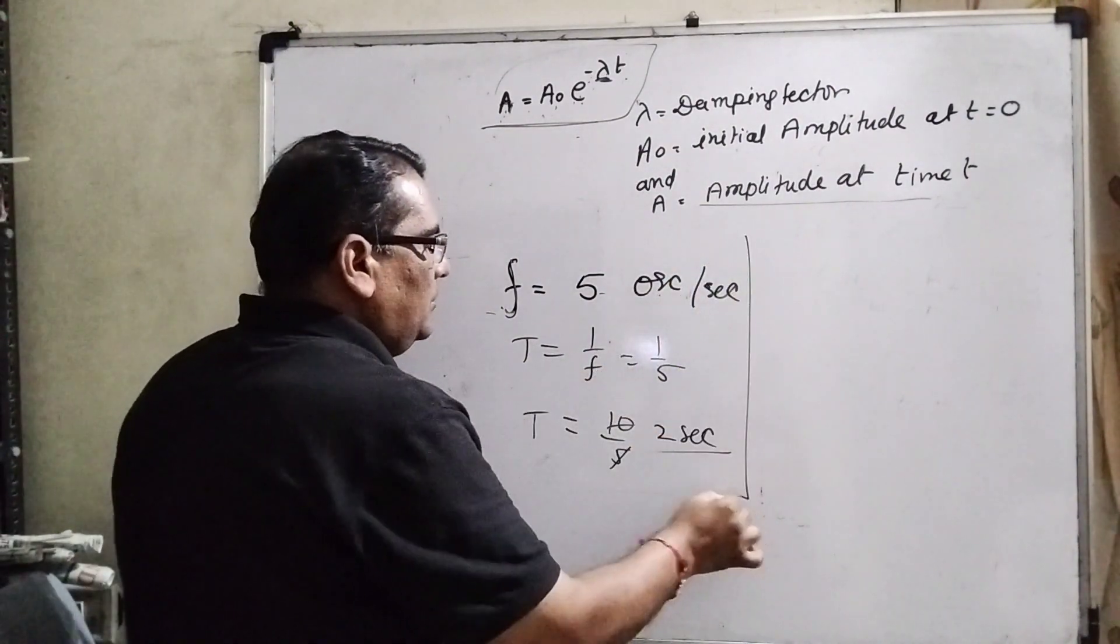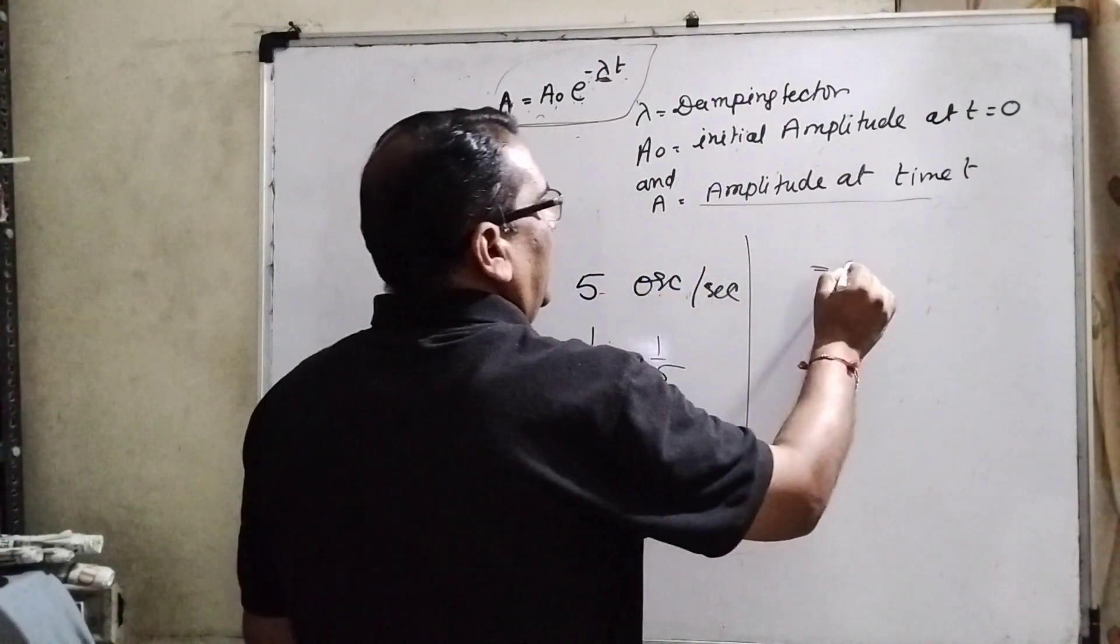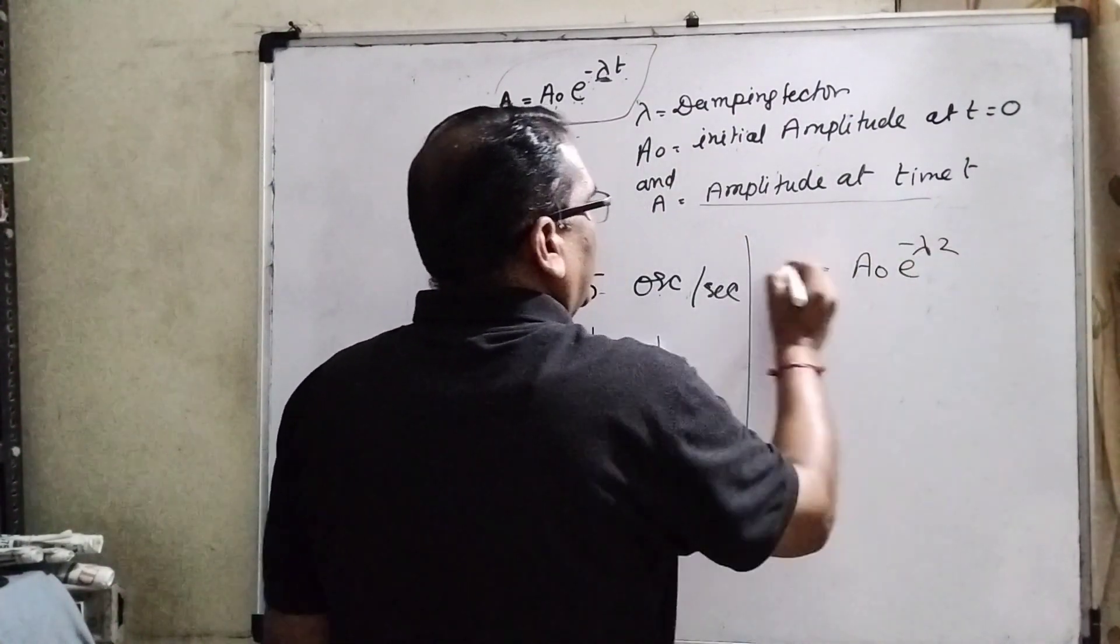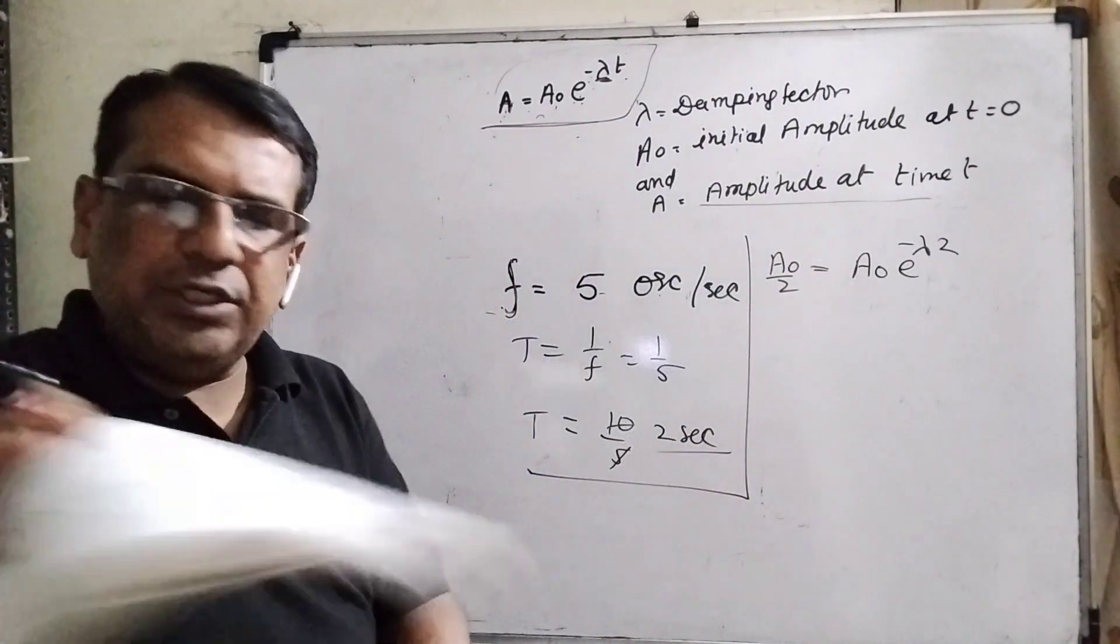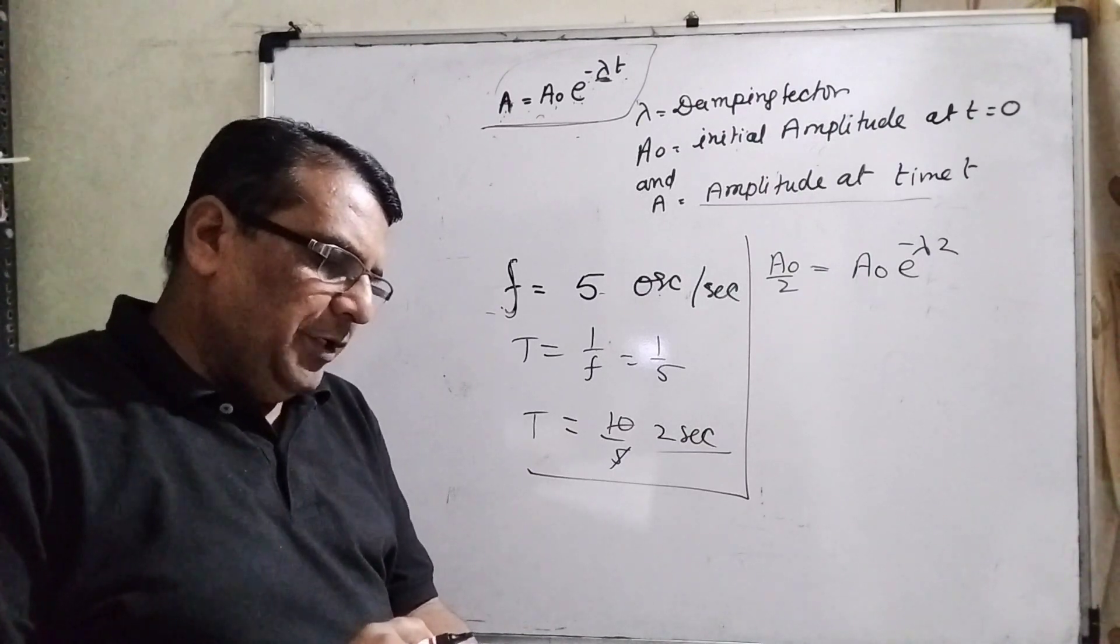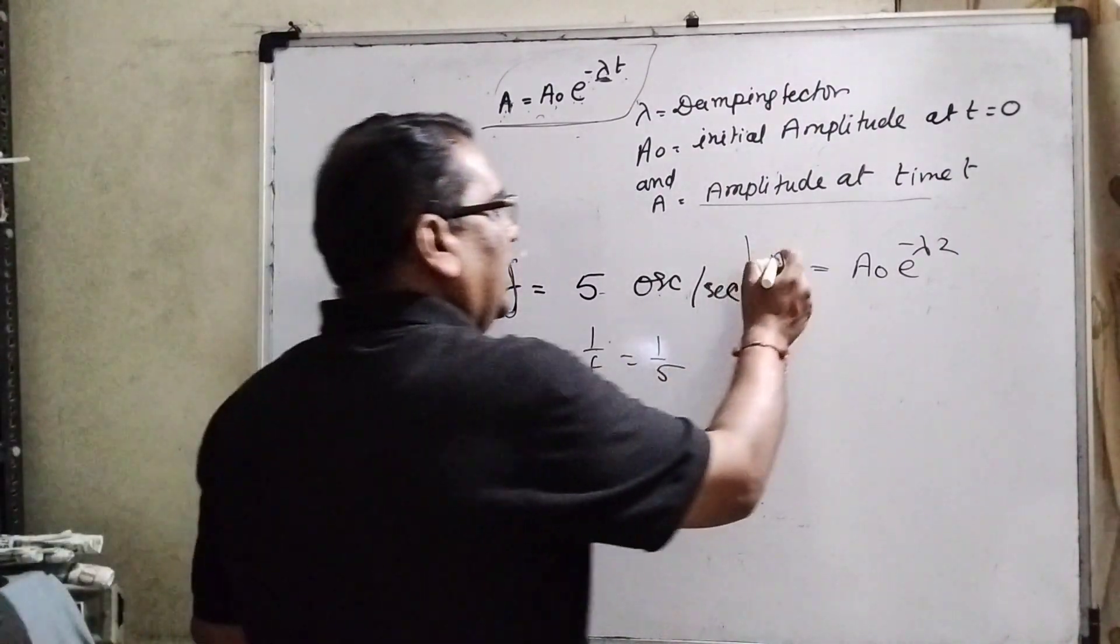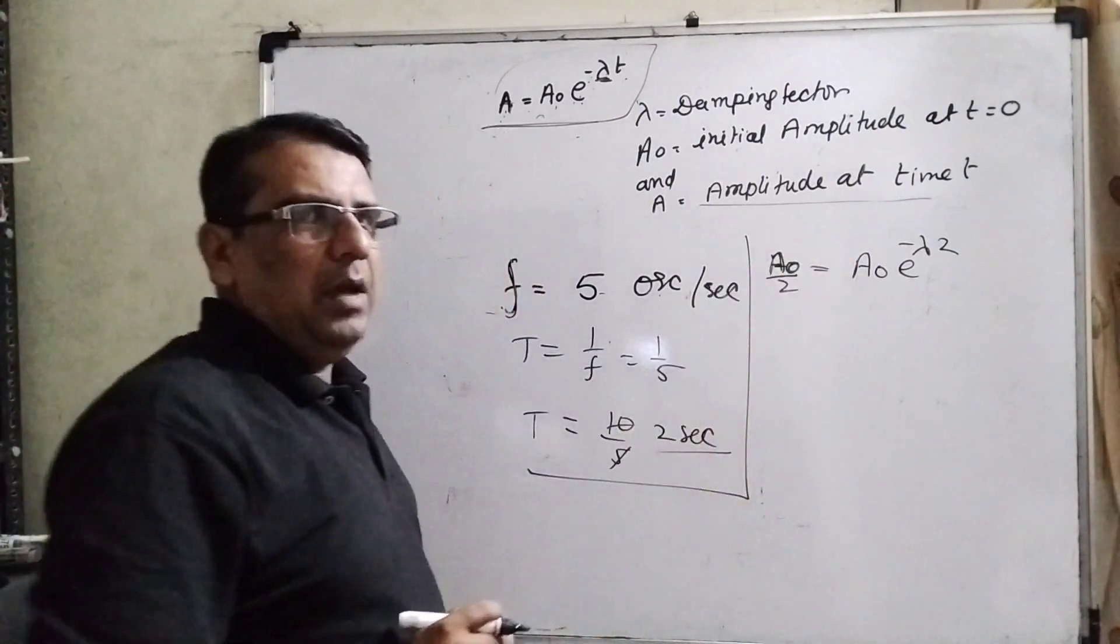So now we substitute the value here: A naught e raised to power minus lambda, and time is 2, then amplitude becomes half. Because it is given in the question, the amplitude drops to half its value for every 10 oscillations, means here at the half of initial amplitude.